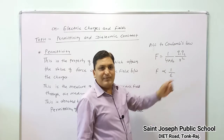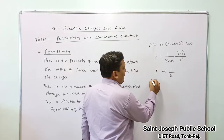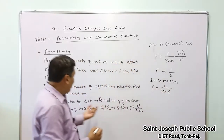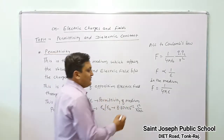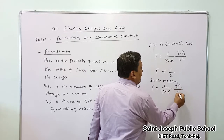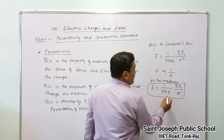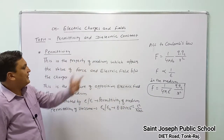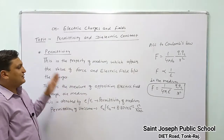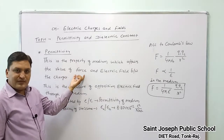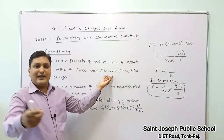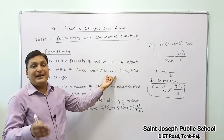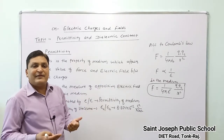We feel the maximum force between the charges in vacuum. If we change the medium, the force in the medium becomes 1 upon 4 pi epsilon, where epsilon is the permittivity of the medium — different for different mediums. Permittivity is the property of the medium which affects the force and electric field between charges. A medium with higher permittivity means fewer electric field lines penetrate or pass through it.